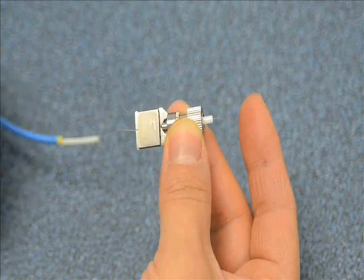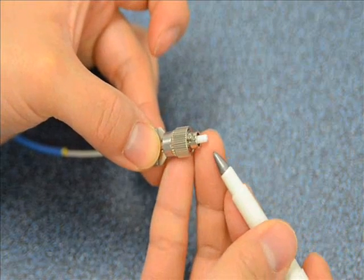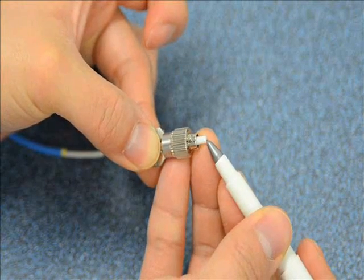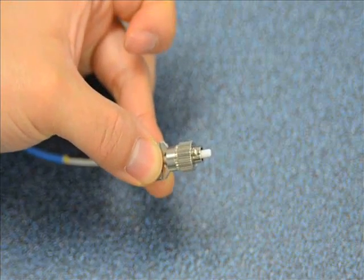Close the magnetic clip, take a cleaving pen, score it, pull the fiber out, and you're ready to go.